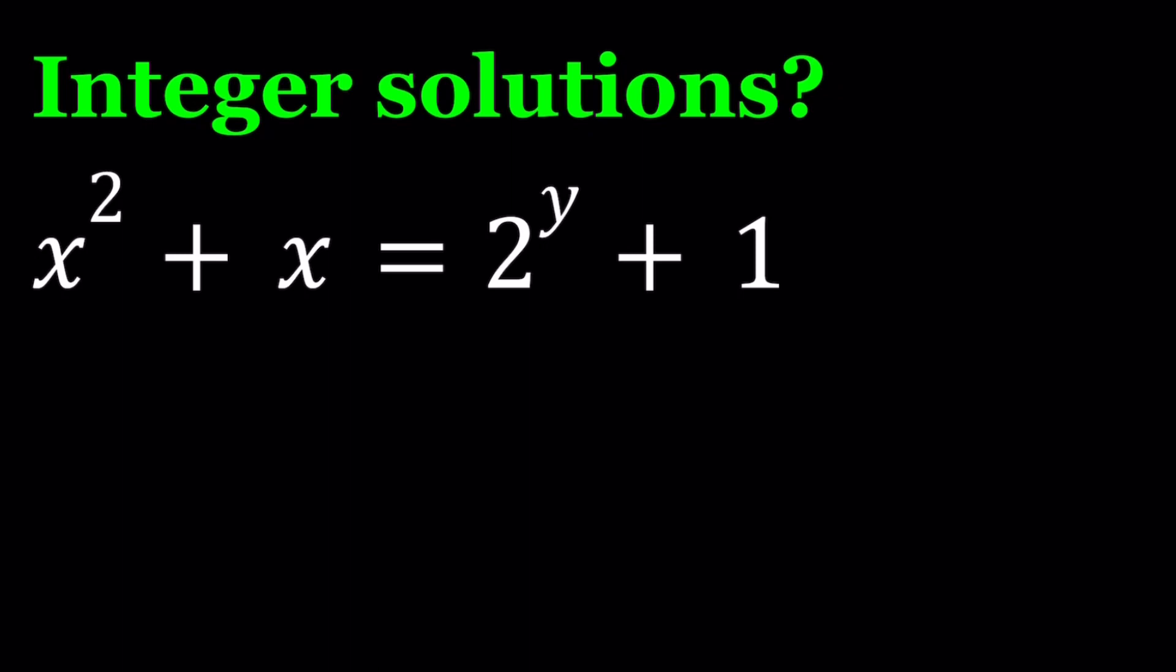First of all, one of the things that you should notice is we don't have as many equations as number of variables. That's why we're looking for specific solutions. If we were looking for real solutions, we would probably end up having infinitely many.